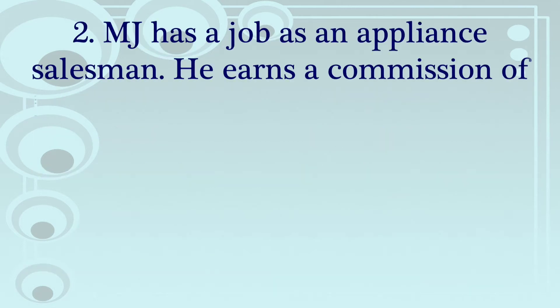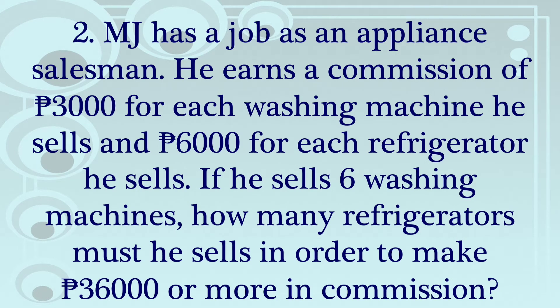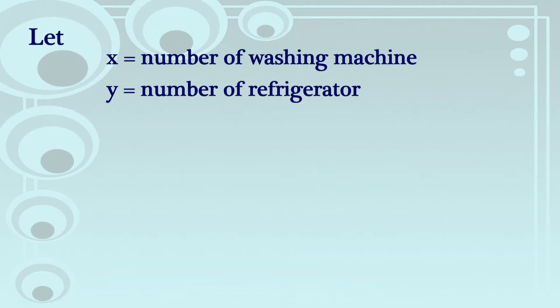So let's solve number 2. MJ has a job as an appliance salesman. He earns a commission of 3,000 pesos for each washing machine he sells and 6,000 pesos for each refrigerator he sells. If he sells 6 washing machines, how many refrigerators must he sell in order to make 36,000 pesos or more in commission? So we let X be the number of washing machines and Y be the number of refrigerators.